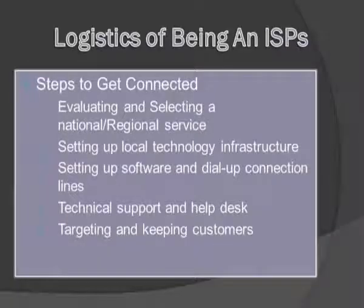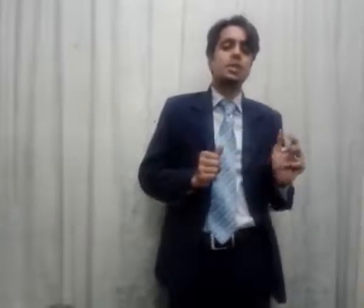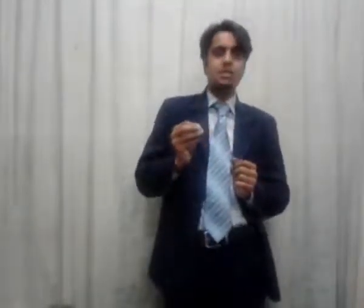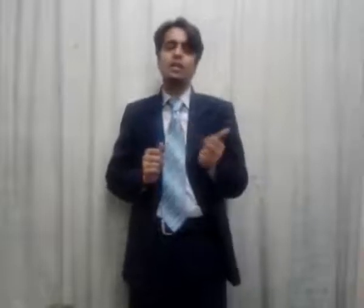Now let's move to our next topic: logistics of being an internet service provider. Logistics means the planning of processes — what we are going to plan to be an ISP. This logistics is based on 5 steps. Number one is selecting a regional ISP as a backbone. Number two is setting up infrastructure within the organization to connect clients. The third step is setting up dial-up connections and installing software. After that, one must set up technical support. And the final step is targeting and retaining customers.